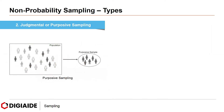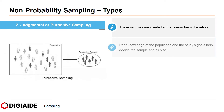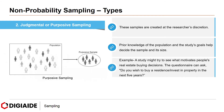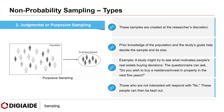Next, judgmental or purposive sampling. These samples are created at the researcher's discretion. Prior knowledge of the population and the study's goals help decide the sample and its size. For example, a study might try to see what motivates people's real estate buying decisions. A question like 'Do you wish to buy a residence or invest in property in the next 5 years?' is asked. Those who are not interested respond with no and can then be excluded.